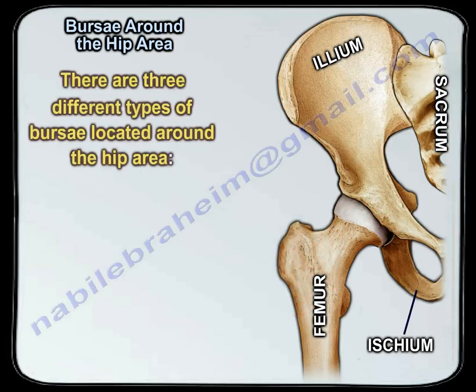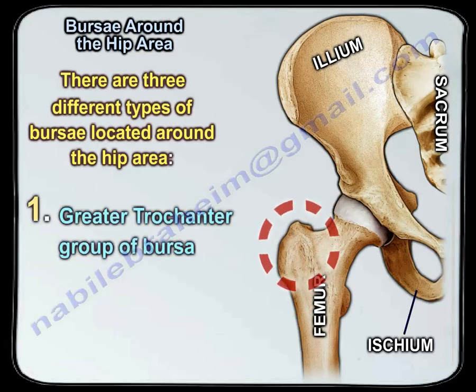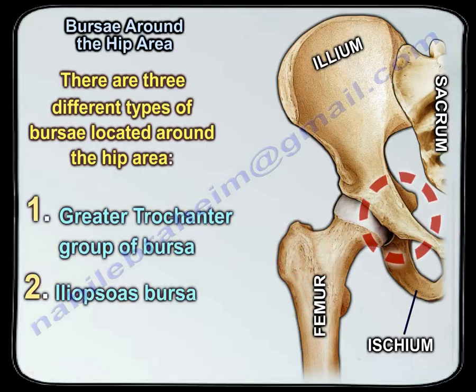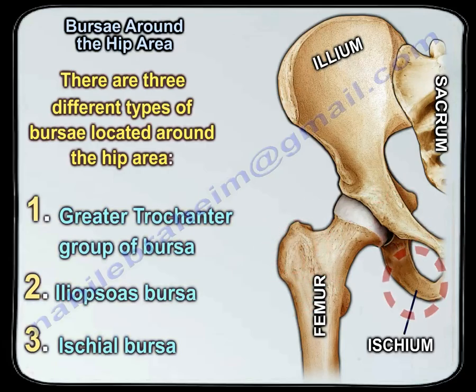There are three different types of bursa located around the hip area: the greater trochanteric group of bursa, the iliopsoas bursa, and the ischial bursa.